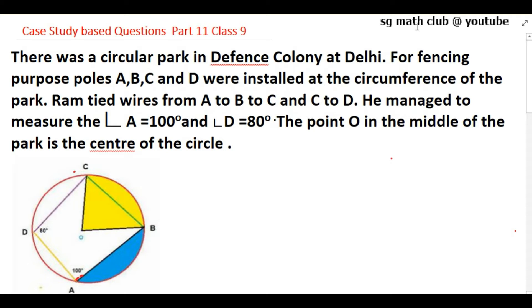Hello everyone, in today's video I will be doing a case study based question from the chapter circles for Class 9. There was a circular park in Defence Colony, Delhi. For fencing purposes, poles A, B, C, and D were installed at the circumference of the park.